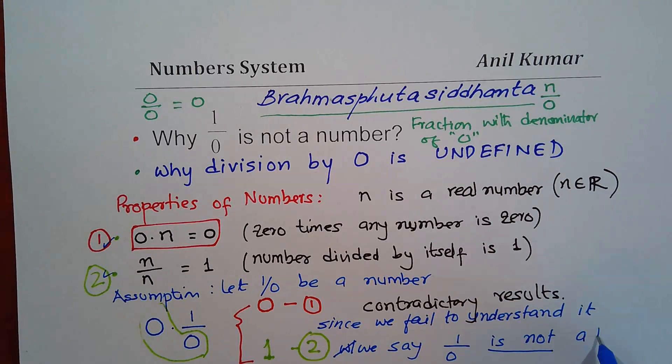Do you get my point? So 1 over 0 is not a number since it could give us two options in our definition of number systems. Therefore, it is not a number. And since 1 over 0 is not defined, we say it is undefined. So that's my take on this. I hope it makes some sense.